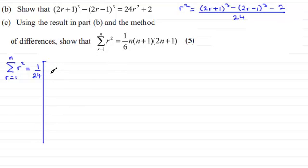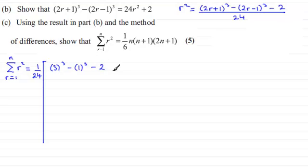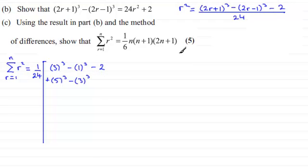When r=1, the first term is 2×1+1=3, so we've got 3³, and then minus — when r=1 here we get 1³, so minus 1³, and then minus 2. Now we add what we get when r=2: in this first bracket we get 5³, so plus 5³, and then in this bracket when r=2 we get minus 3³, and then minus 2.